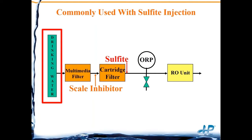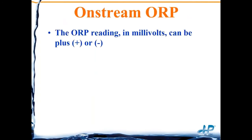As an on-stream instrument to make sure we are completely de-chlorinated, we can put an ORP meter downstream of the sulfite injection, with feedback to the sulfite injection pump. If the ORP is getting a little high, the feedback tells the pump to inject more sulfite. Typically there's also a shutdown of the RO unit — an alarm gives you a few minutes to investigate, and if the system is still in alarm, the RO unit actually shuts down to protect the membrane.